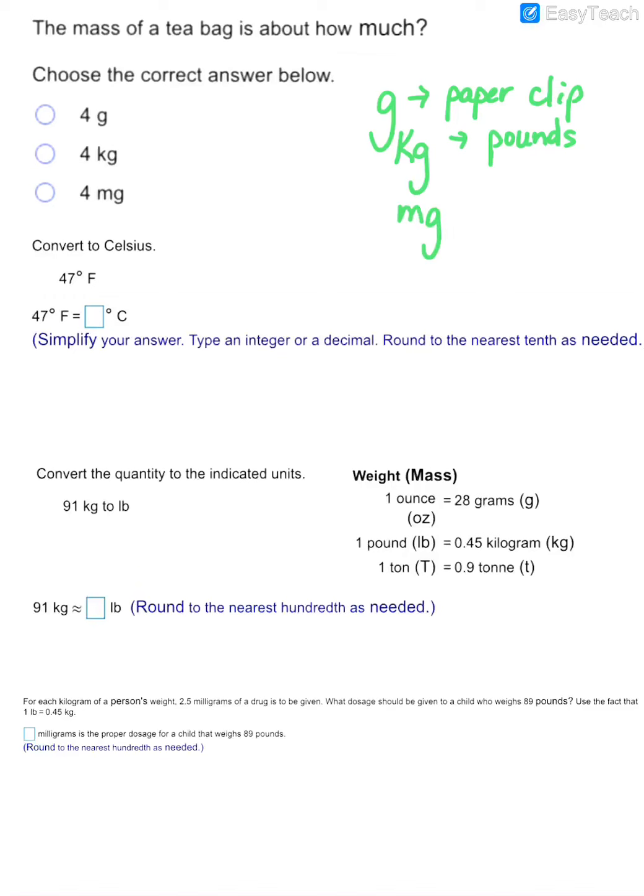They're much smaller than a gram. And so I would think about something like not even the size of a grain of salt. So if we're talking about a tea bag, it definitely doesn't weigh pounds. It's certainly more than a grain of salt. So probably the one that makes more sense here is the fact that it would weigh about four grams.